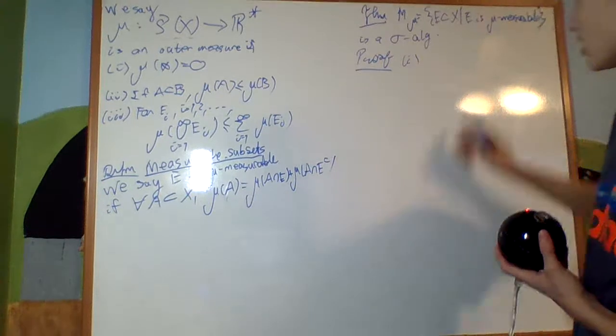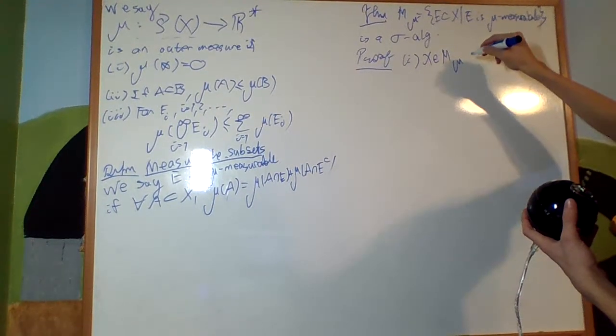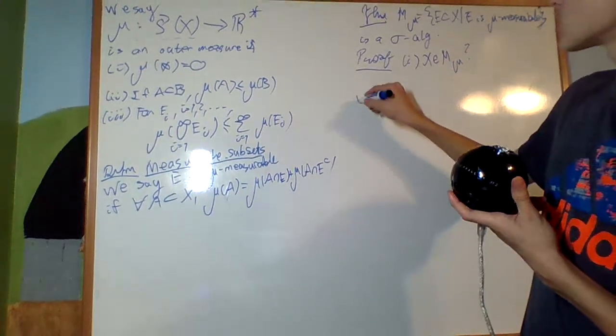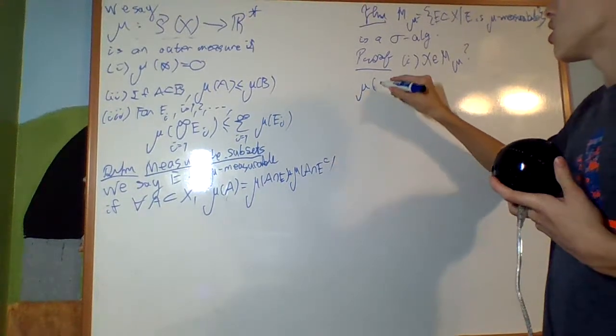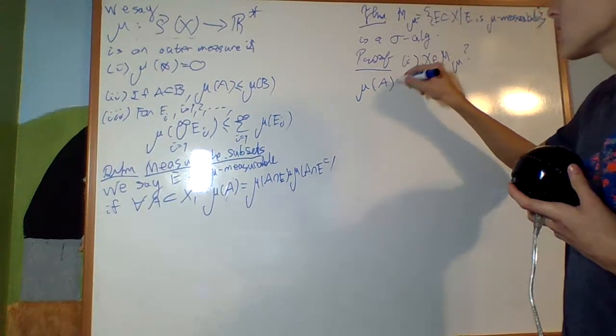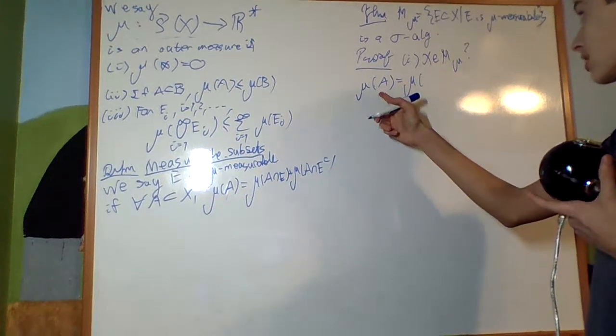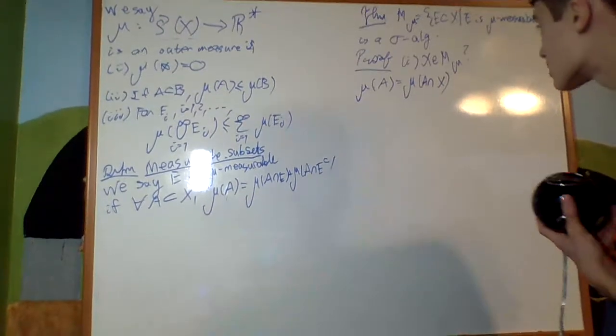First, is X an element of it? X an element of M_mu. Well, it's pretty obvious because the measure mu of A is equal to, well, because A is a subset of X, that's just A intersect X.